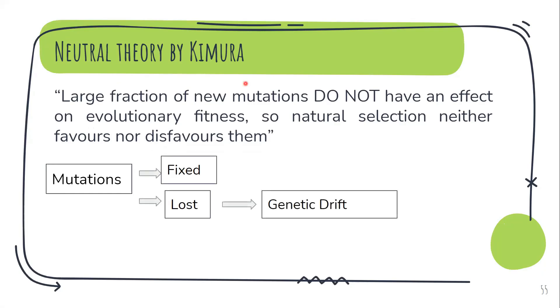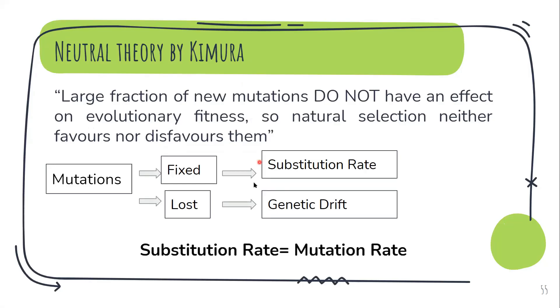Now if at all the mutation is fixed, the rate at which the fixing occurs is called as a substitution rate. And what Kimura put forth was, the substitution rate is equal to the mutation rate. That is the rate at which a particular mutation is fixed is equal to the rate at which new mutation happens.